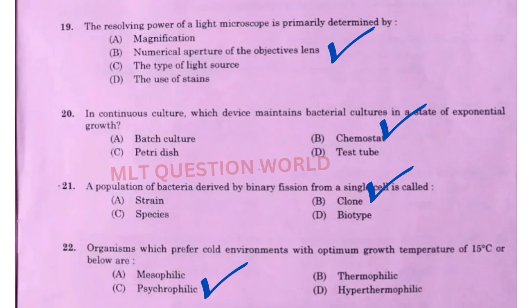Next question: The resolving power of a light microscope is primarily determined by? The right answer is option B, numerical aperture of the objective lens. Next question: In continuous cultures, which device maintains bacterial culture in a state of exponential growth? The right answer is option B, chemostat.